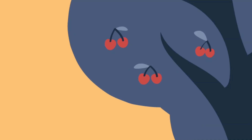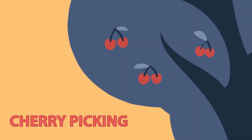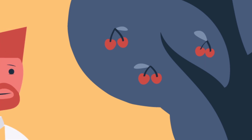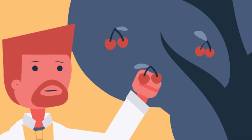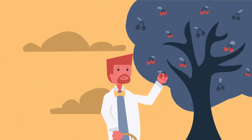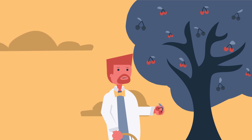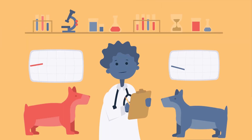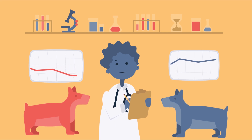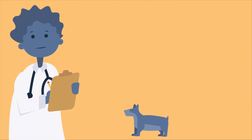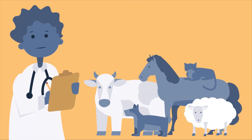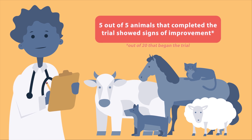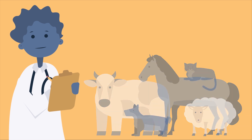One such technique is the process of cherry-picking data. This name comes from the idea that if a cherry picker only picks the healthiest and ripest fruits, it could lead an observer to wrongly assume that all of the cherries on the tree are healthy, even though that isn't the case. This has been observed in the veterinary industry, where vets are more likely to report only the positive trials when testing the responses of dogs, cats, horses, cattle, and sheep to novel drugs, especially when the studies have been funded by pharmaceutical companies.